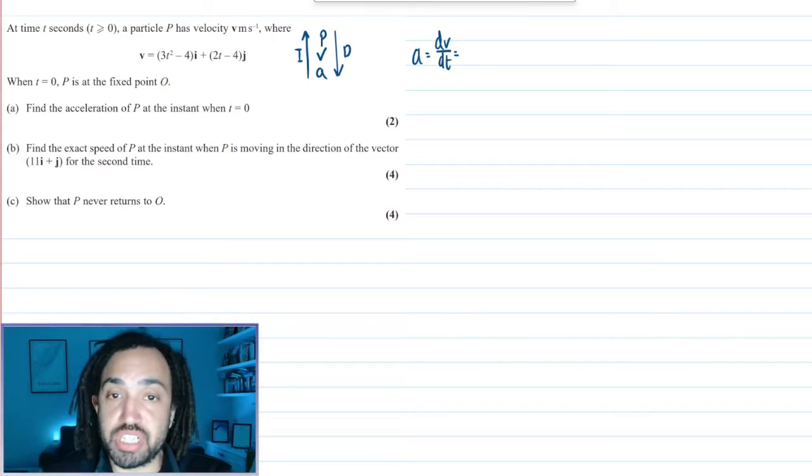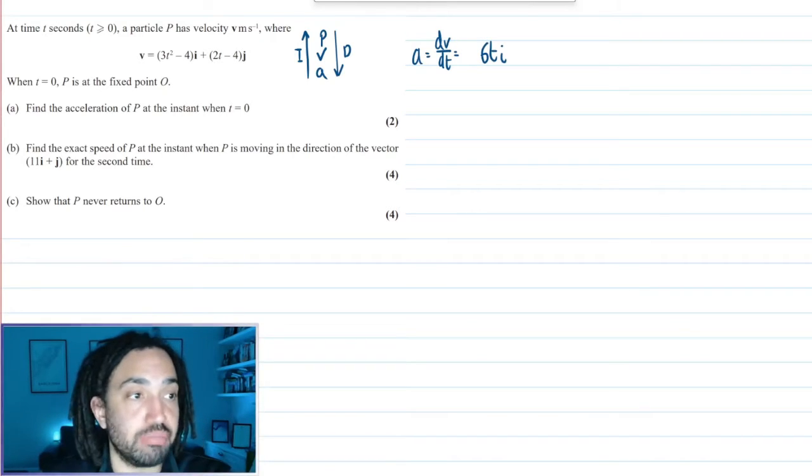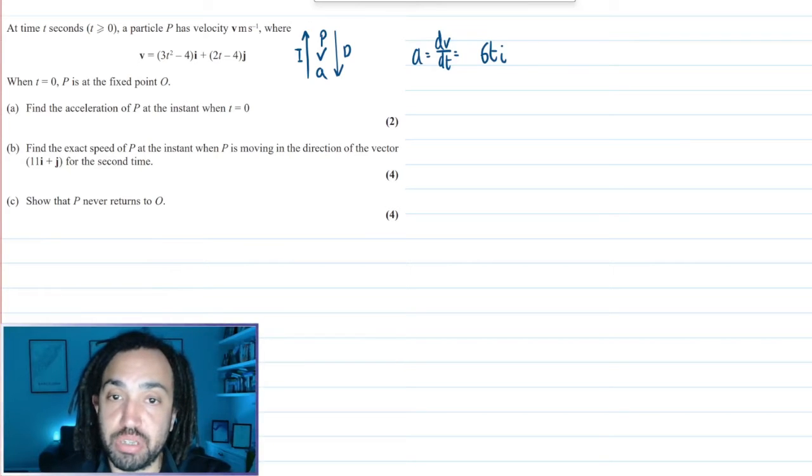When I differentiate the i components I get 6t, that's it, just 6ti. And when I differentiate the j components I just get 2j.